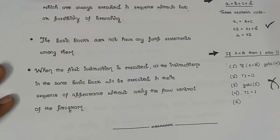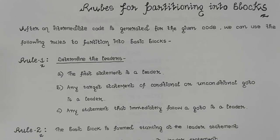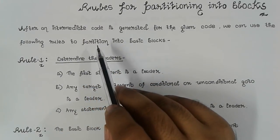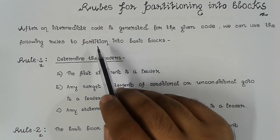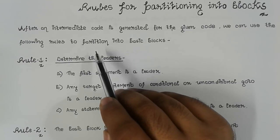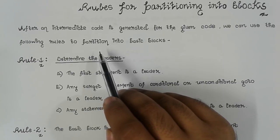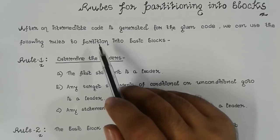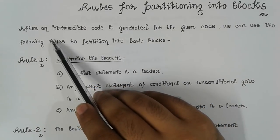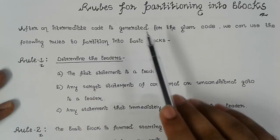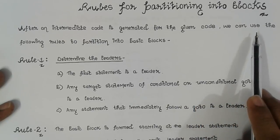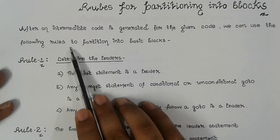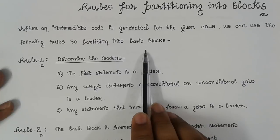Now we will see how basic blocks are generated — specifically, how to partition our three address code into basic blocks.